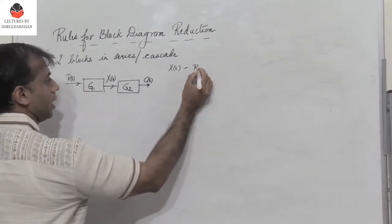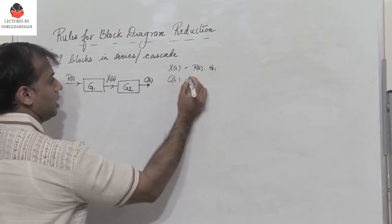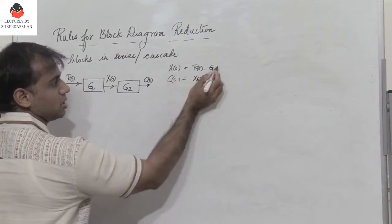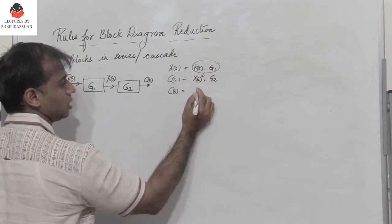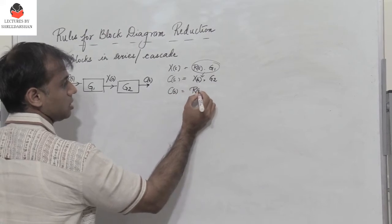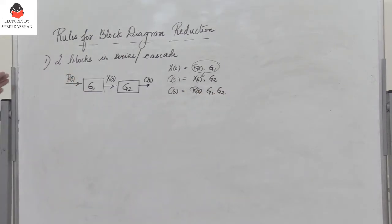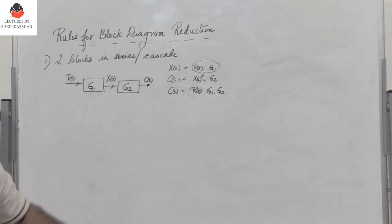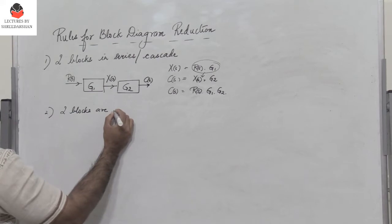The output c of s is equal to x of s into g2. But x of s equals r of s into g1, so c of s is nothing but r of s into g1 into g2. Therefore, if two or more blocks are connected in series or cascade, we simply multiply the individual transfer functions.